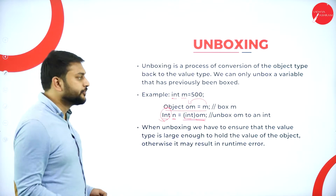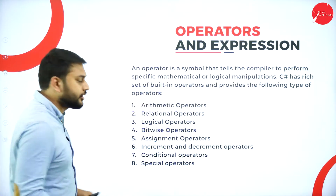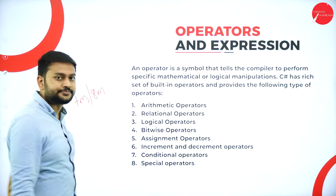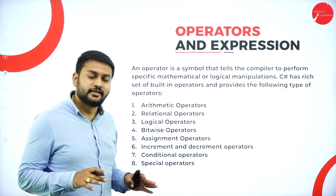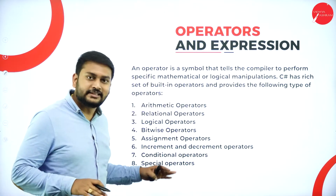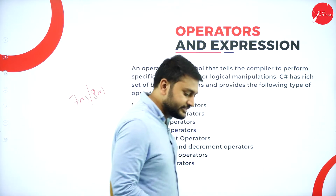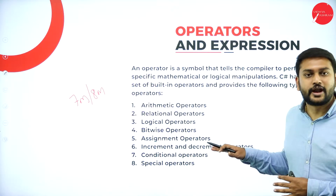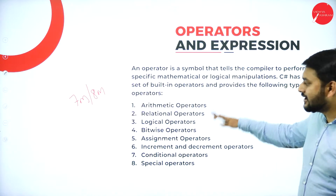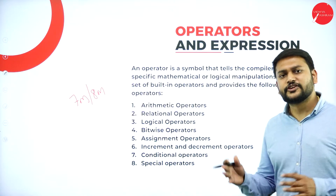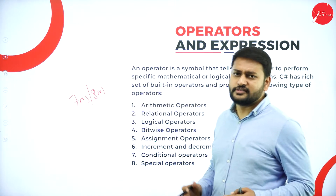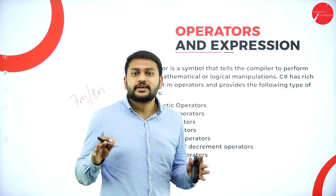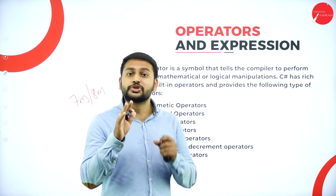Moving forward to the next concept — that's going to be very important with respect to your seven to eight marks. You would have studied operators in different programming languages; same concepts apply in C# as well. You have eight different types of operators. First question: what is an operator? An operator is a symbol which initiates the action between two operands.